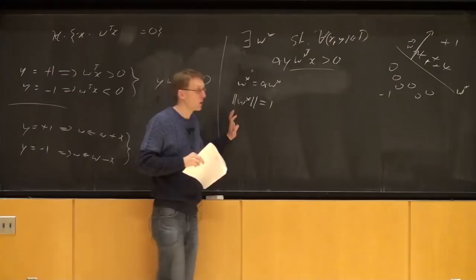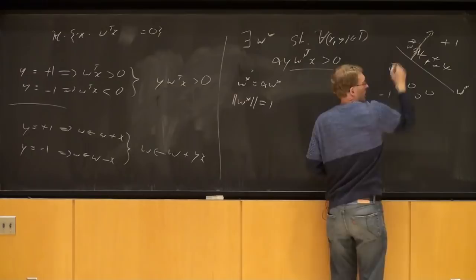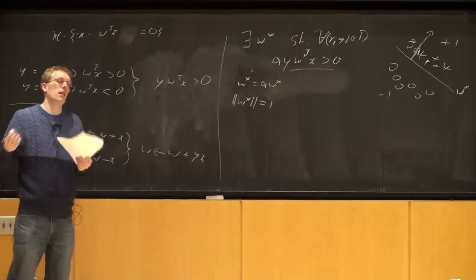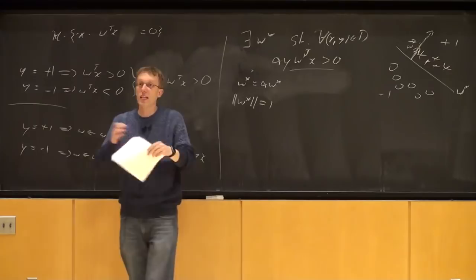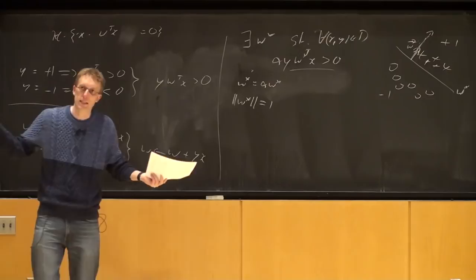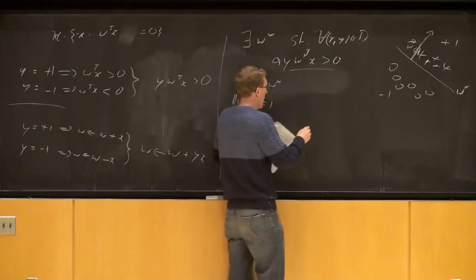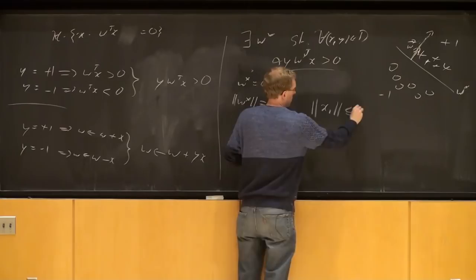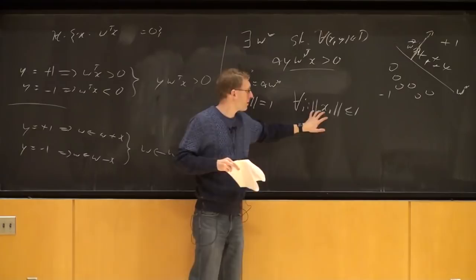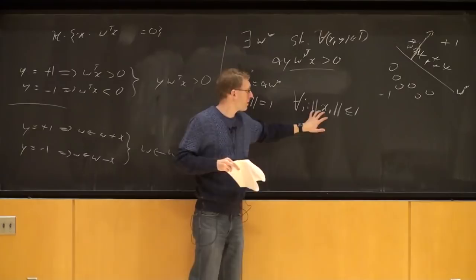We can also rescale all our data. We assume ‖x_i‖ ≤ 1 for all i, which means we divide every x by the norm of the point with the largest norm. The geometric intuition: we're rescaling so the entire dataset falls into a circle of radius one. The furthest point lies right on the edge. Our w vector also has exactly norm one. Once we find the solution, we can rescale everything back.